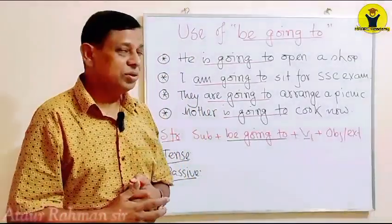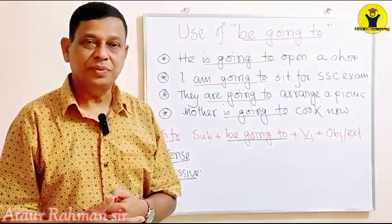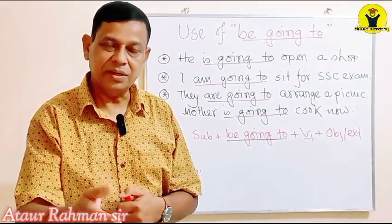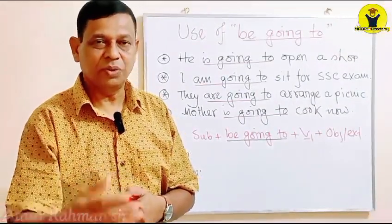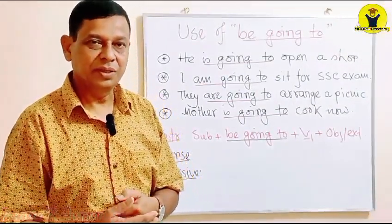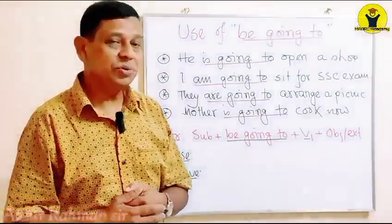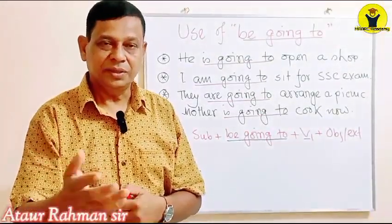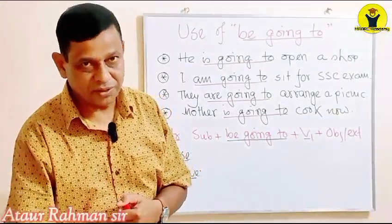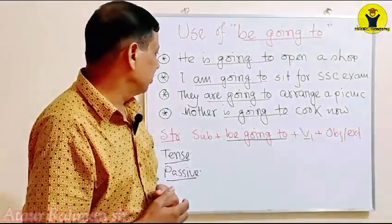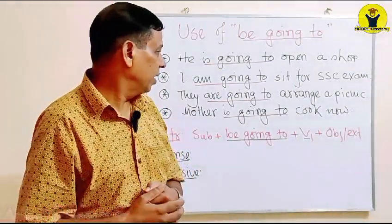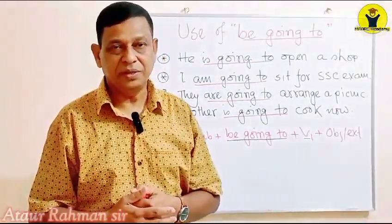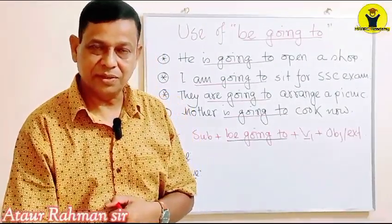For example: 'He is going to open a shop.' Very recently, he is going to open a shop — meaning he is about to open a shop. Second sentence: 'I am going to sit for the SSC exam this year.' This year I am going to sit for the SSC exam. Next sentence: 'They are going to arrange a picnic.' They are going to arrange a picnic.